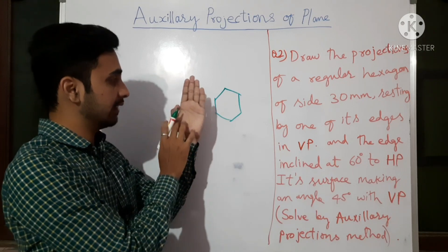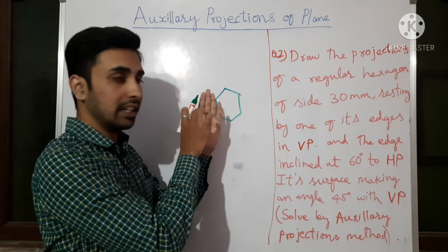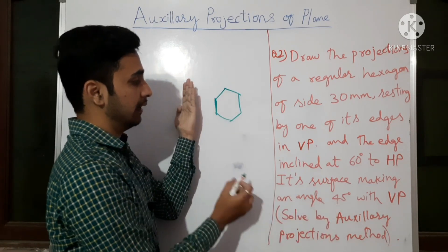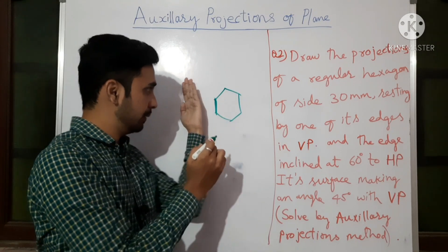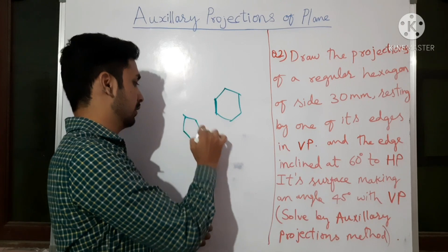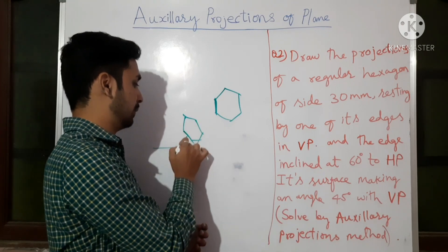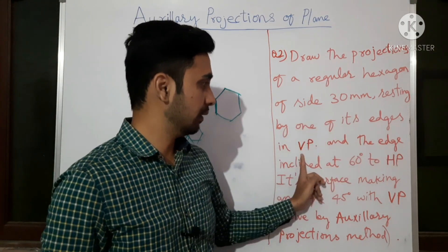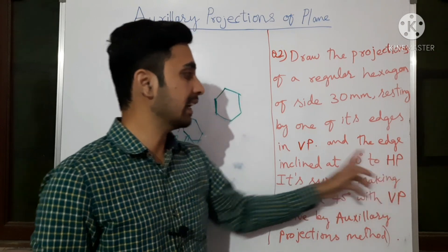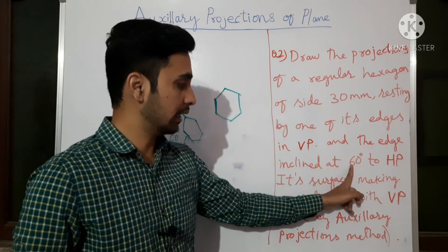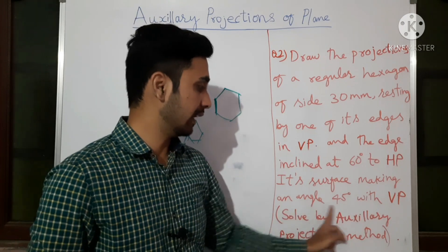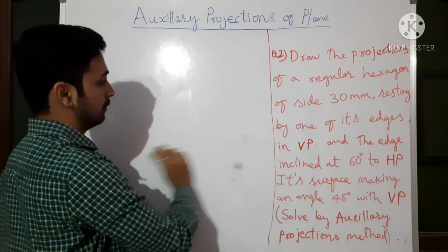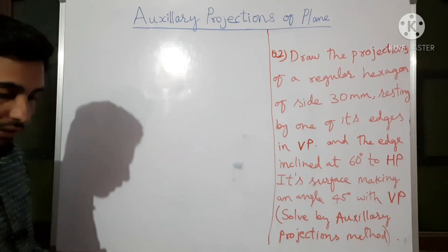One edge of the hexagon is inside the VP, the surface of the hexagon makes 45 degrees with VP, and the edge by which it rests in VP makes 60 degrees with HP. So: 30 mm side, edge resting in VP, edge inclined 60 degrees to HP, surface making 45 degrees with VP.